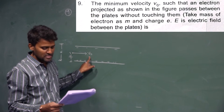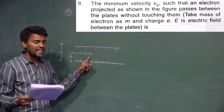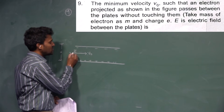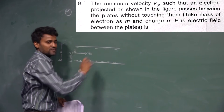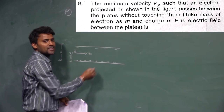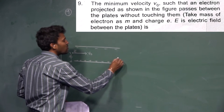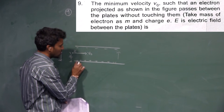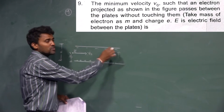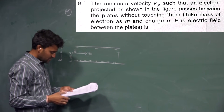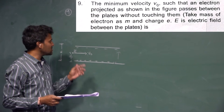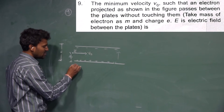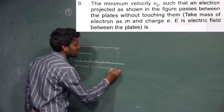The minimum velocity V0 is such that an electron projected as shown in the figure. One electron is projected with a velocity V0 in the horizontal direction inside the electric field. The electric field direction is positive to negative — down is positive, upper is negative. The length given is L.